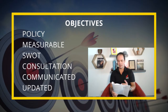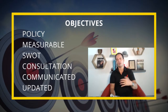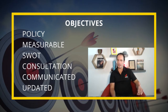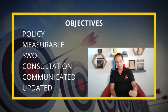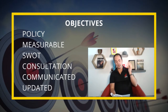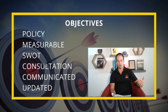The organisation shall establish objectives at relevant functions and levels in order to maintain and continually improve the management system and the performance of the organisation. It could say OH&S management system and OH&S performance, quality management system and quality performance, environmental management system, financial management system, or cyber security management system.